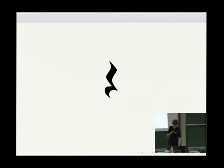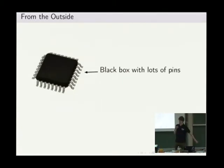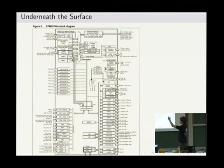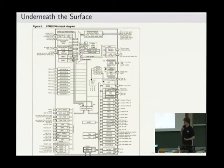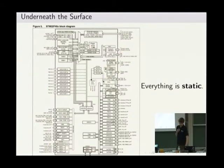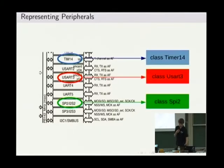Let me take you from where Niklas left you. As an electrical engineer, I observe that all those pins don't change once the chip is produced — that's what I call static; nothing changes during runtime or in your product. If you look under the surface, here's a block diagram of an STM32F4: you can see all those different peripherals connected to a bus, and they don't change. So we want to model this in software using static classes — classes that only have static methods and static members.